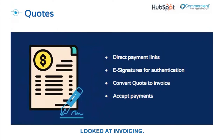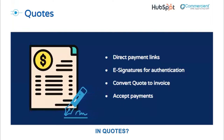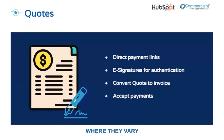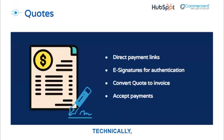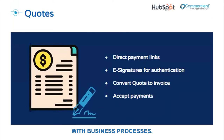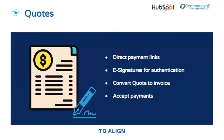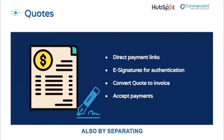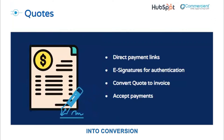So we've looked at invoicing, but the question you might be asking is: how is this different than quotes? In full disclosure, they have a lot of the same functionality. Where they vary is in the business process that they aim to solve. Technically you could use a quote to accept payment, but in alignment with business processes, this is typically an invoicing role. This amazing new tool allows HubSpot to align to traditional accounting processes. Also, by separating the quoting process and invoicing, you'll have deeper insights into conversion rates and more.